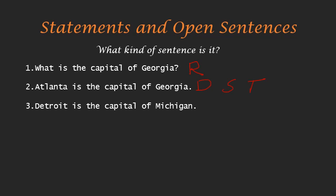"Detroit is the capital of Michigan." Something is still being asserted, and this is either true or false. So this is a statement, but it's a false one — Detroit is not the capital of Michigan. "He is a famous actor." Something is being asserted, saying this person, he, is a famous actor. But we can't say if it's true or false because we don't know who he is. So this is an open sentence that depends on the variable 'he.' Only when we specify who he is do we get a statement that is either true or false.